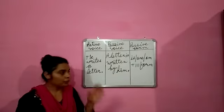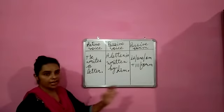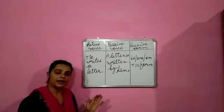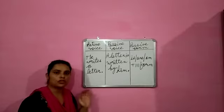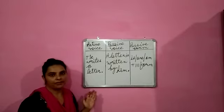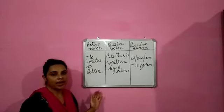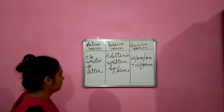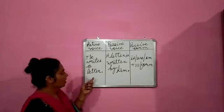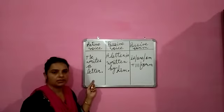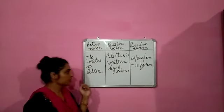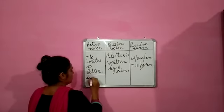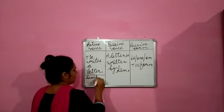Now, here I am going to tell you the rules of changing from active to passive. What are the rules applied for changing a sentence from active to passive? Let's start first with simple present tense. This is the rule of simple present.